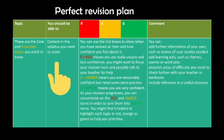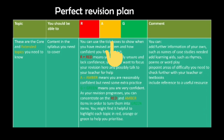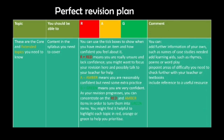In the third column, you can use the tick boxes to show when you have revised an item and how confident you feel about it. Red means you are really unsure and lack confidence — you might want to focus your revision here and possibly talk to your teacher for help. Amber means you are reasonably confident but need some extra practice. Green means you are very confident. As your revision progresses, you can concentrate on the red and amber items in order to turn them into green. You might find it helpful to highlight each topic in red, amber, or green to help prioritize.